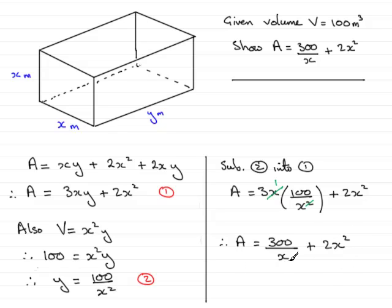And there you have it. We've shown then that the area A is equal to 300 over x plus 2x squared as requested. And that brings us quite nicely to the end of this first part of this question. Thank you.